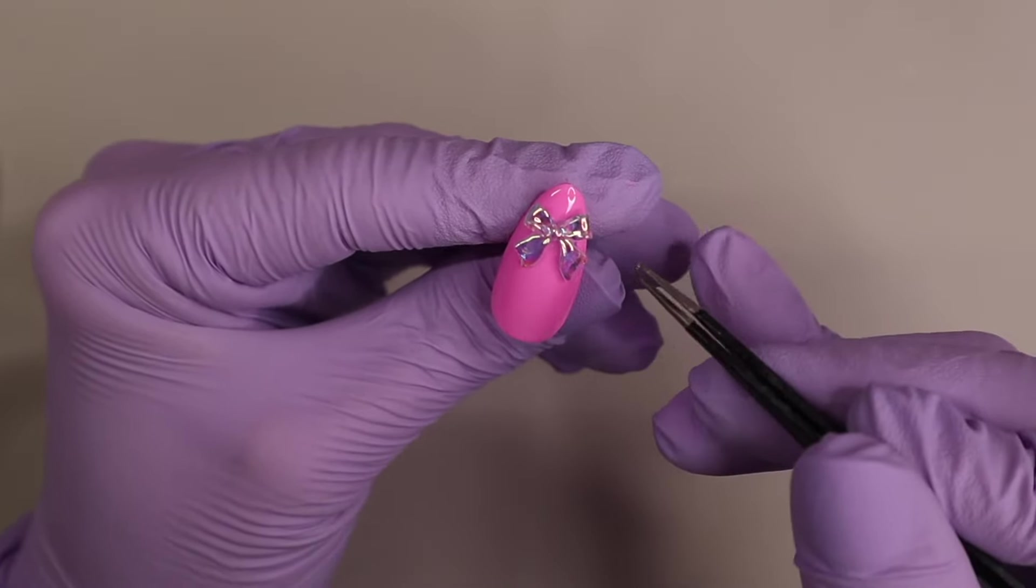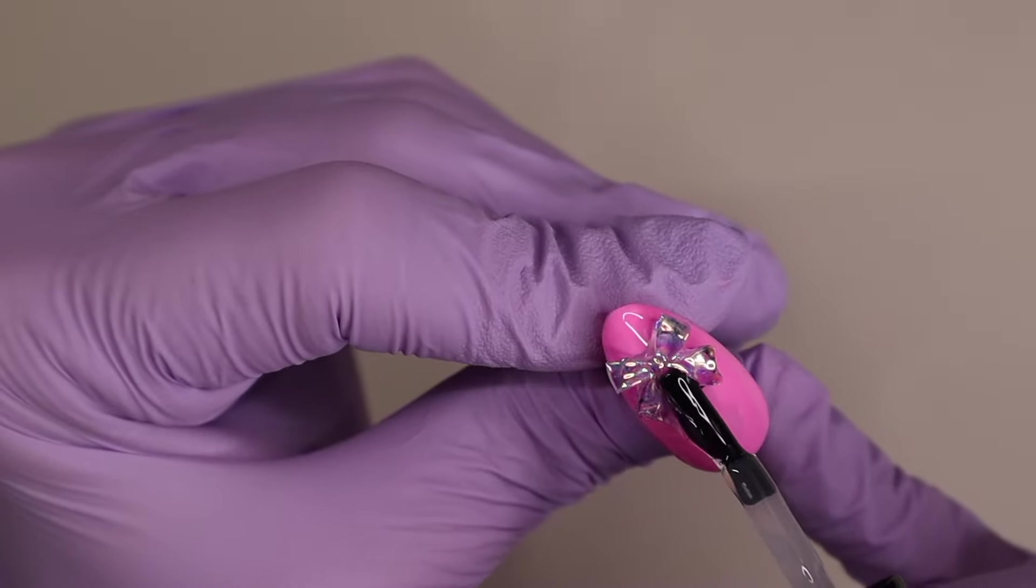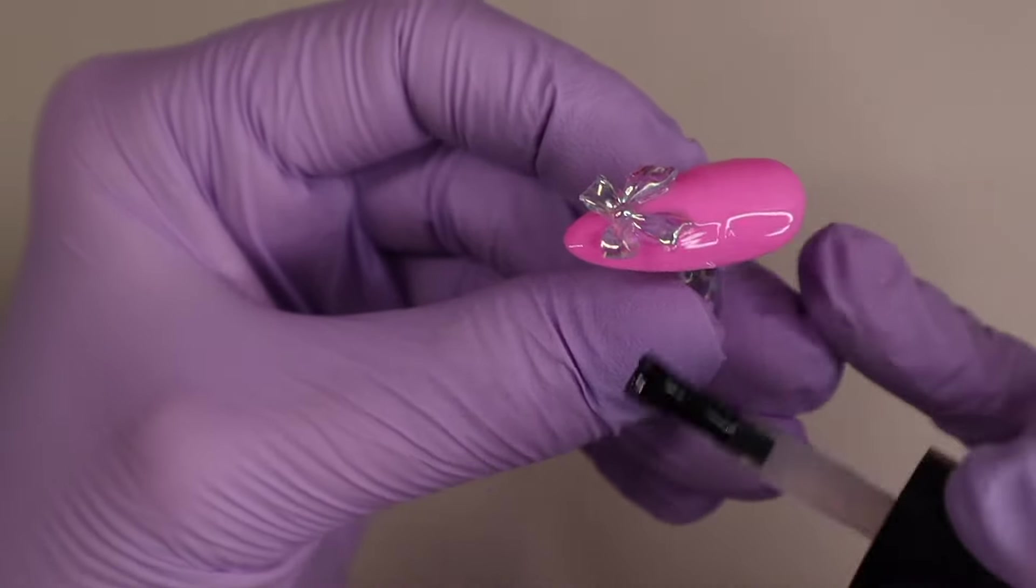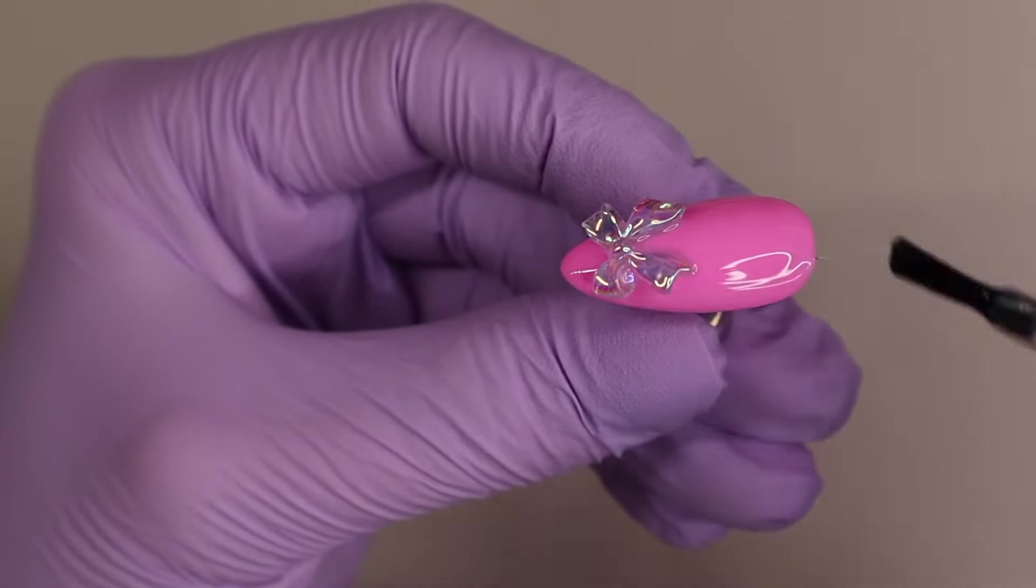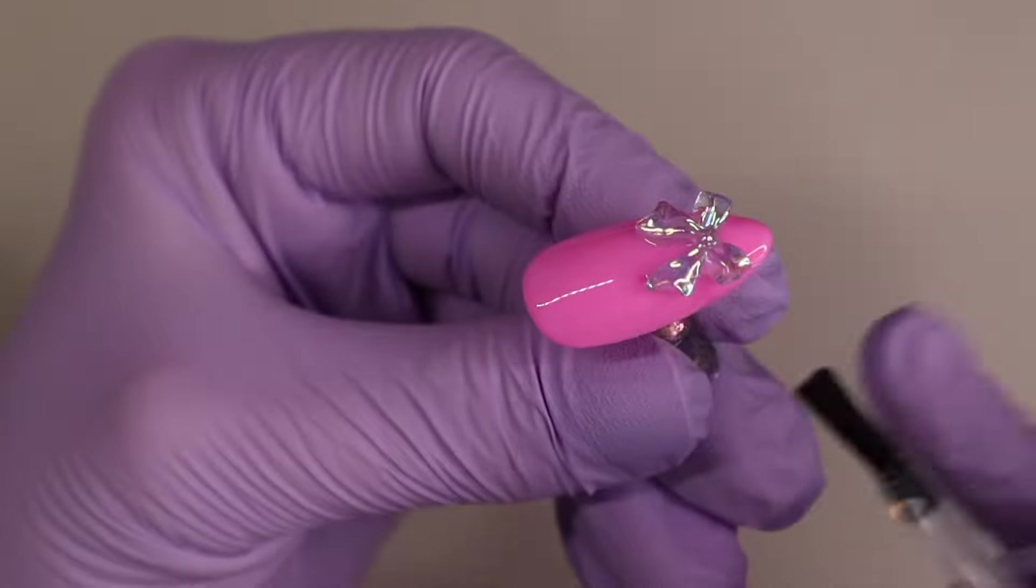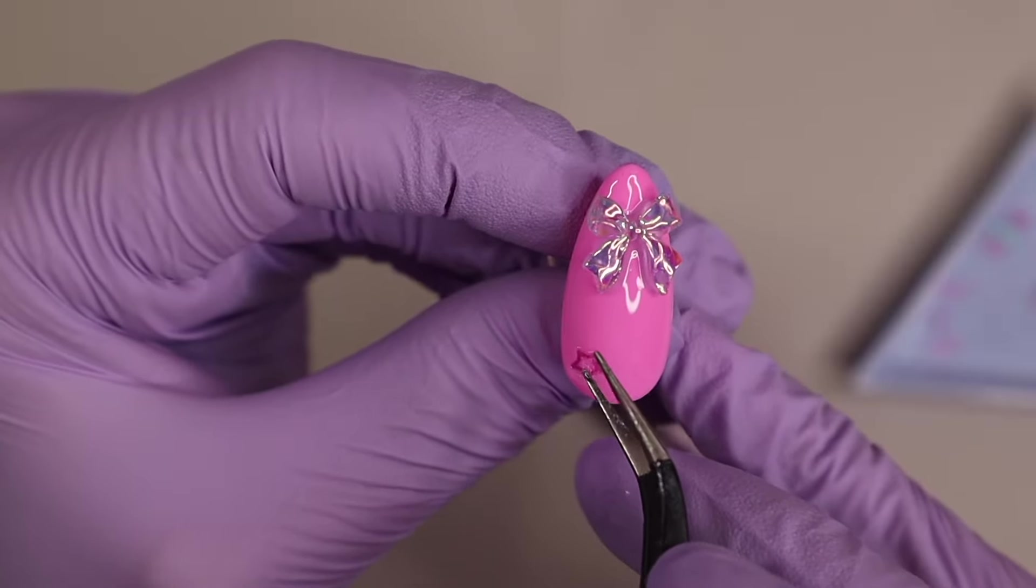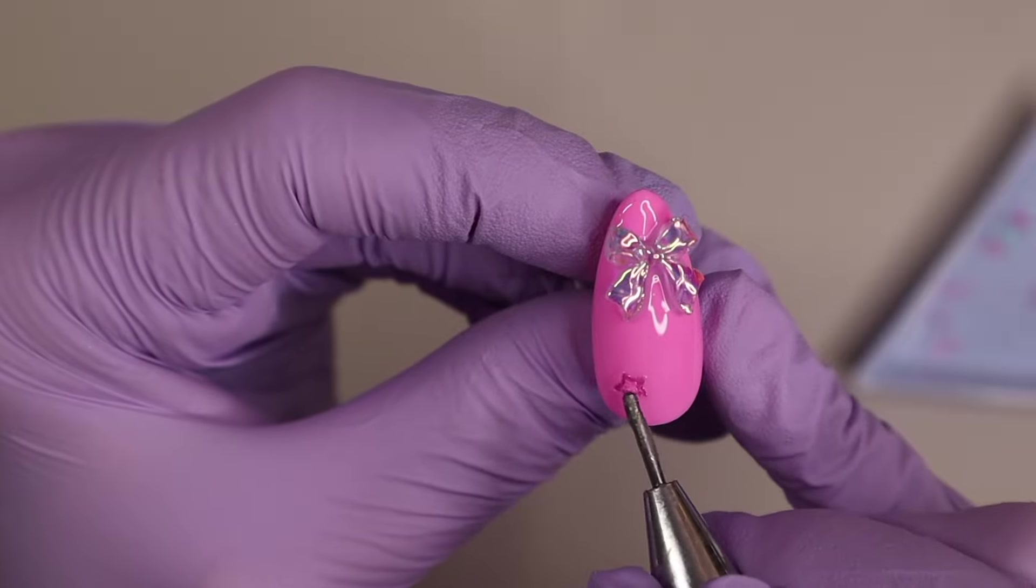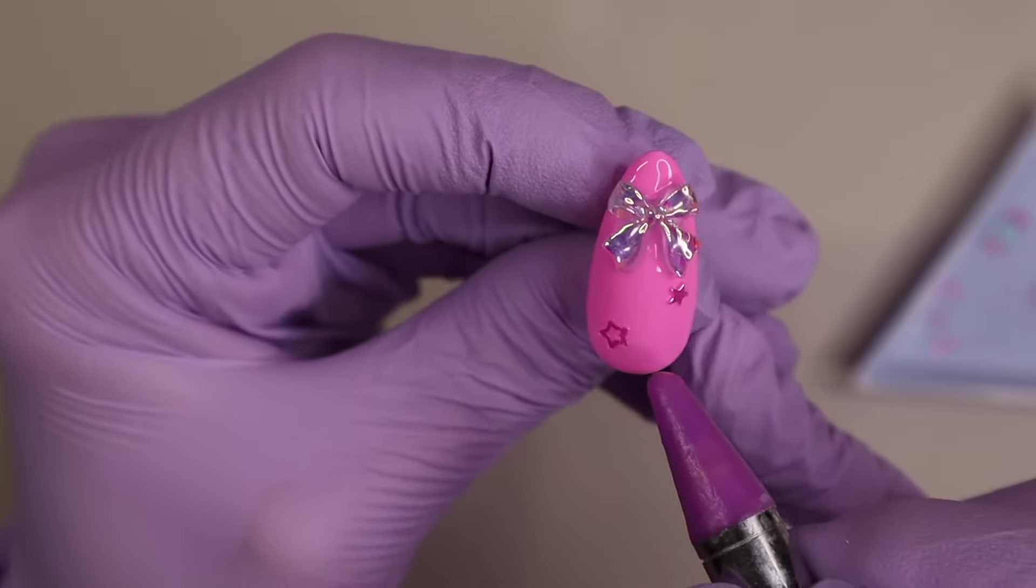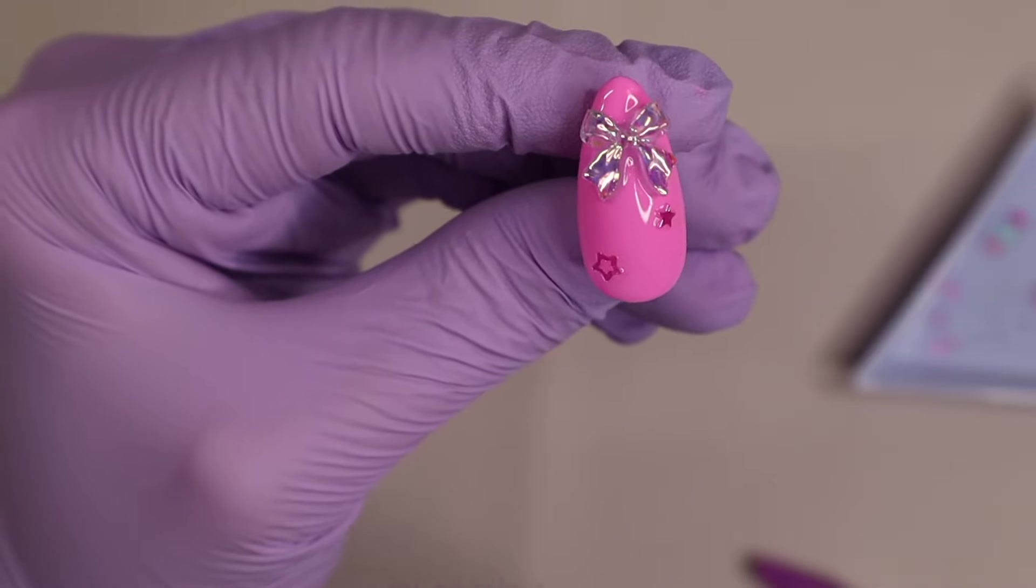Since I will be using chunkier sequins on this nail I wanted to have a thicker base for the sequins to really submerge into and not protrude on the nail and have it be all lumpy and bumpy. I'm going in with a builder gel, putting a nice layer on the nail and also going around those charms to add some extra protection and really lock those in place. This is the same technique that I use for thinner sequins. I normally will do this with just a regular base gel but since these are thicker sequins I'm using a builder gel.